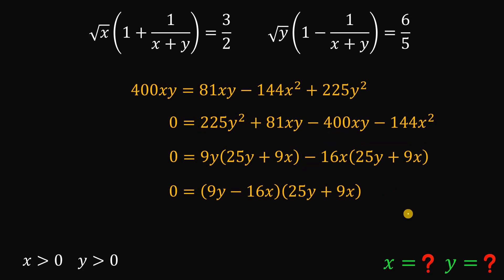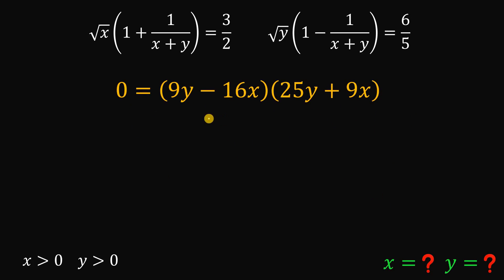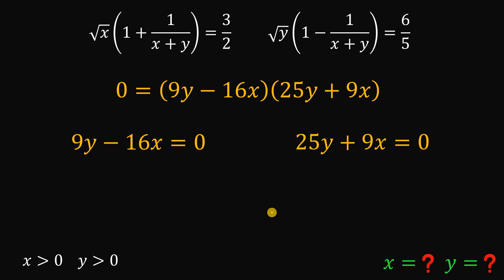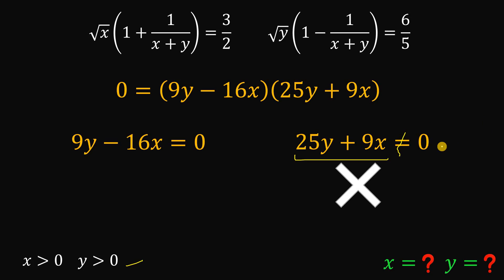Using the zero product property, either 9y minus 16x equals 0 or 25y plus 9x equals 0. Now we use our condition that x and y are both greater than 0. Since both are positive, 25y plus 9x cannot equal 0 because positive plus positive is always positive. So that result is impossible, and the only valid result is 9y minus 16x equals 0, meaning 9y equals 16x.